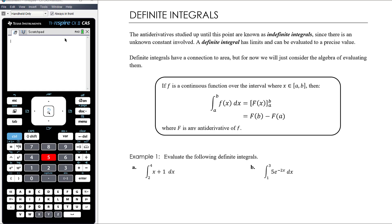What I want to focus on today is separate to thinking about the connection that the integral might have to some sort of area. We want to look at the algebra of evaluating a definite integral, and focus on the notation, making sure we're getting the notation right. So if f is a continuous function over the interval a to b, then we can calculate a definite integral from a to b. I would read that as the integral from a to b of f of x with respect to x.